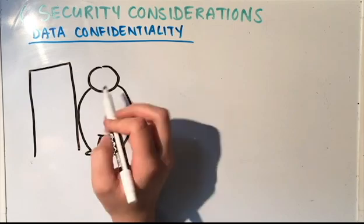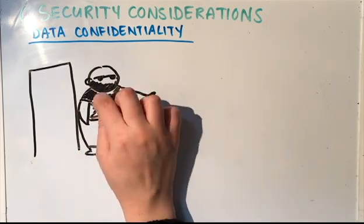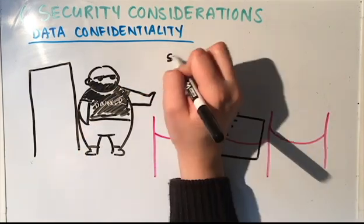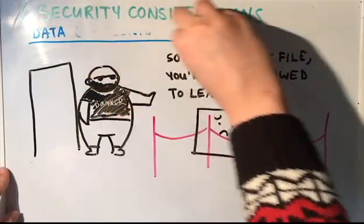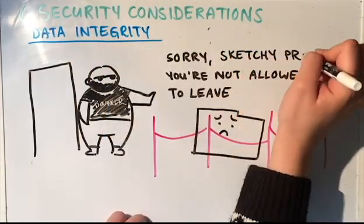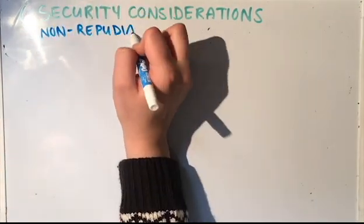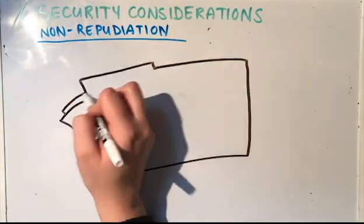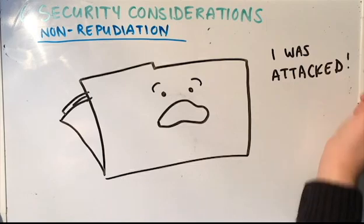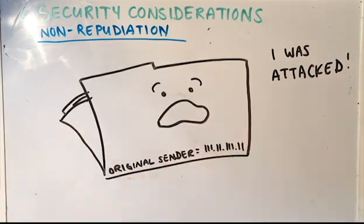Data confidentiality makes sure that data is protected from being sent places it shouldn't be. And data integrity makes sure that data being received is from a trusted entity. Non-repudiation provides the ability to trace data back to its original source. This is especially useful if something goes wrong.